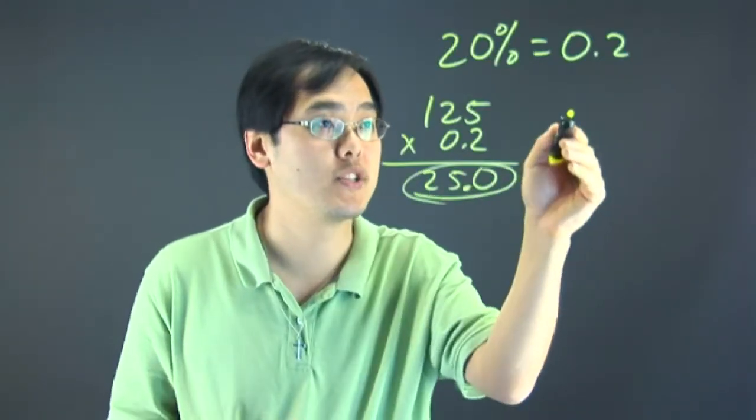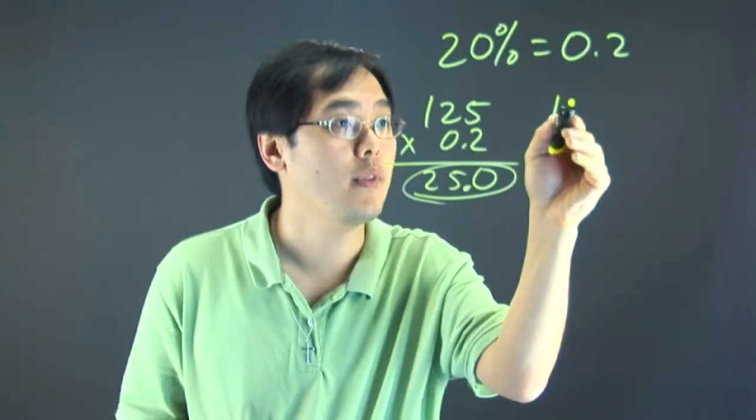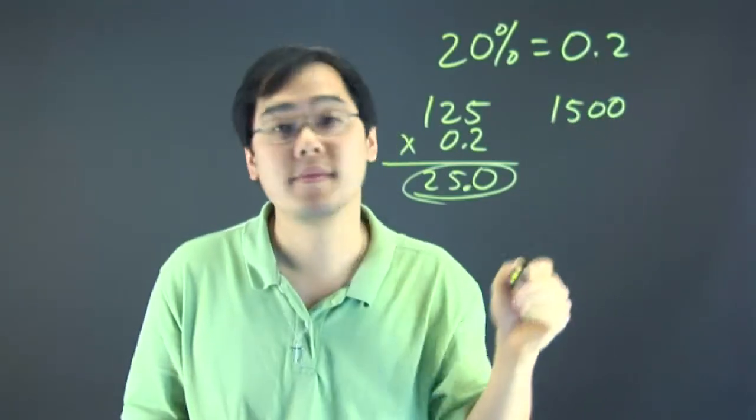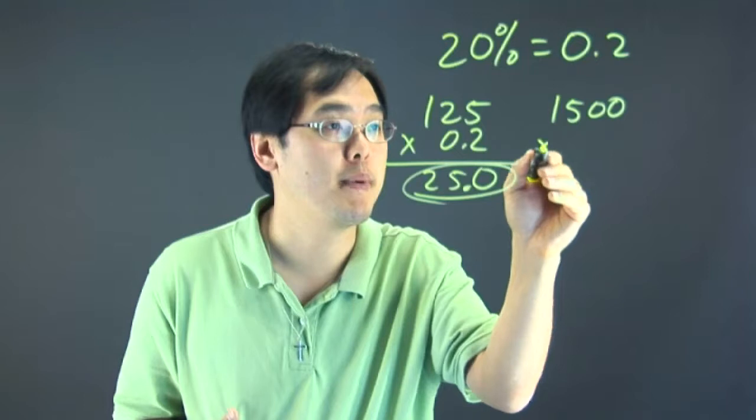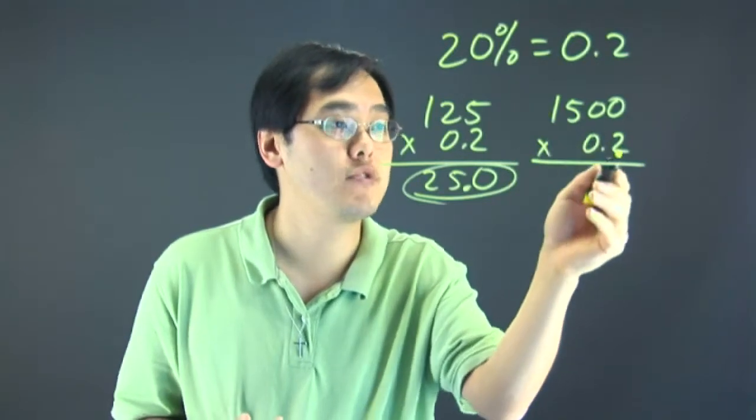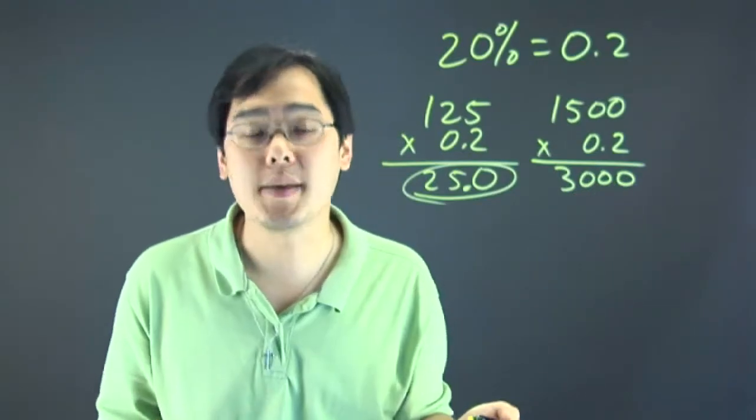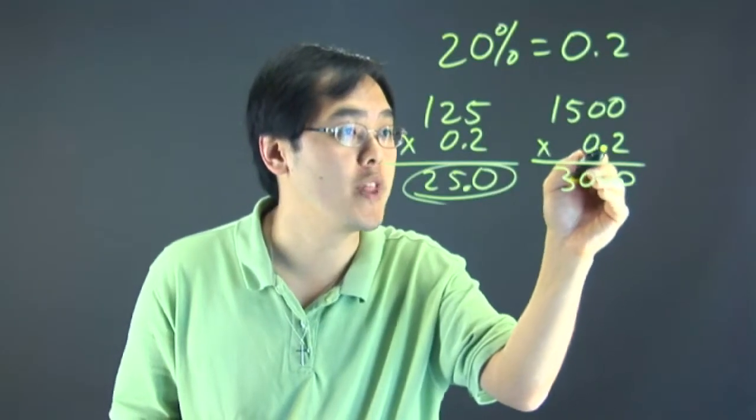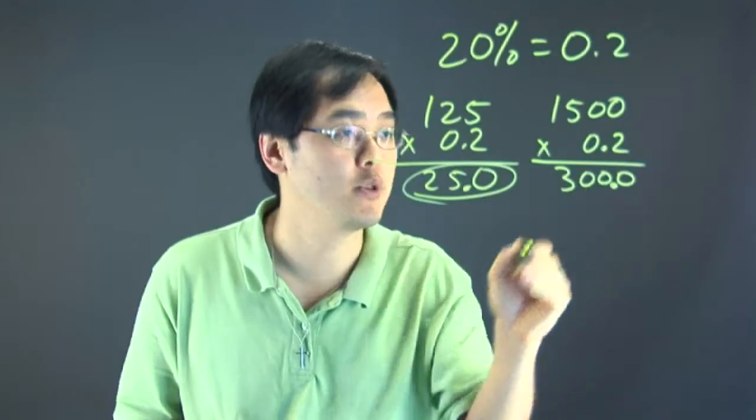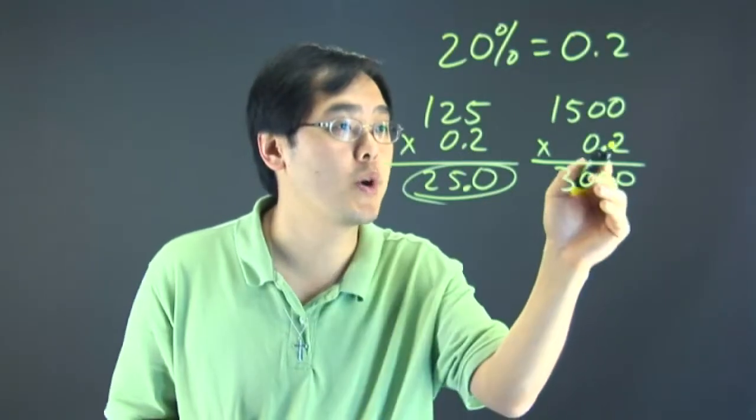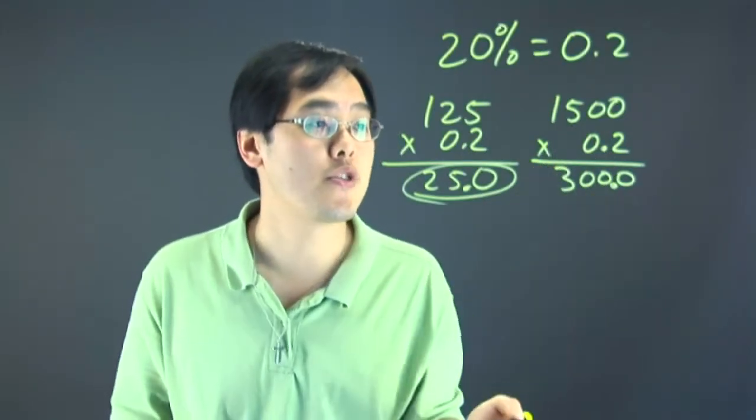Now, if you have a larger number, let's say 1500. Same kind of idea. Multiply by 0.2, but 1500 times 2 is 3000. The only thing you've got to keep in mind is make room for that one decimal place. So just put the decimal like so. So that means 20% of 1500 is 300.